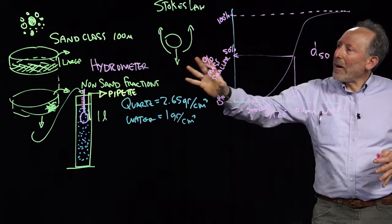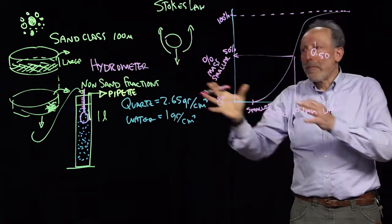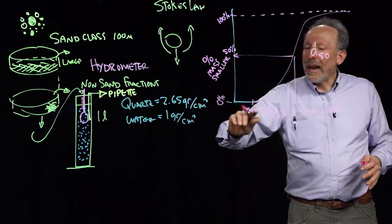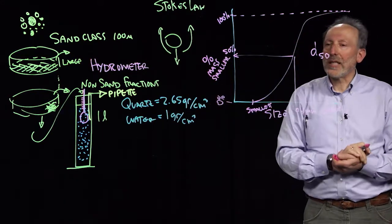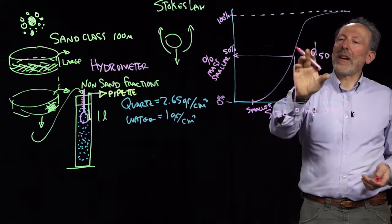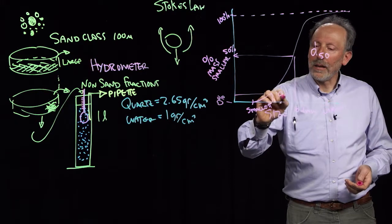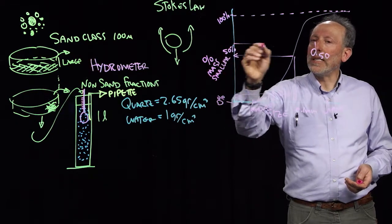So this is how we take a soil, break it down, identify the different constituents in it, and then plot them up in a particle size density plot and identify things like the D50. Another thing that people might identify would be the D10 or the D60.